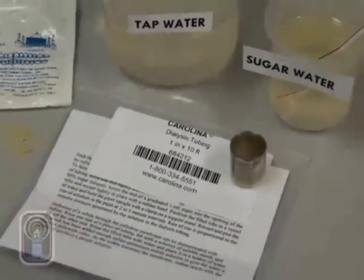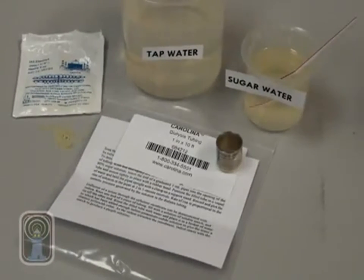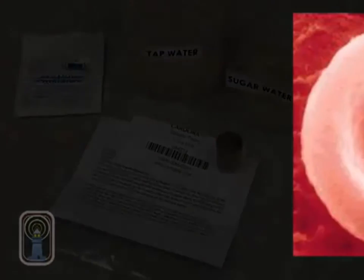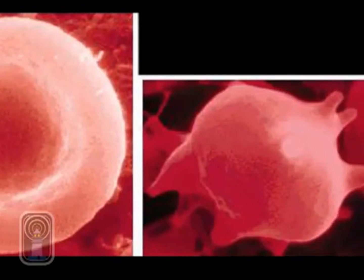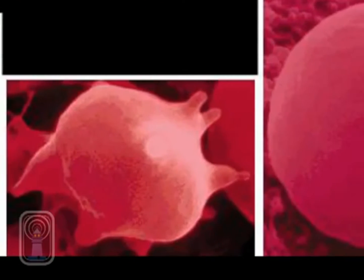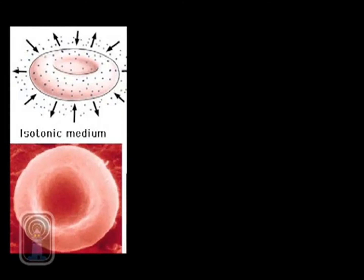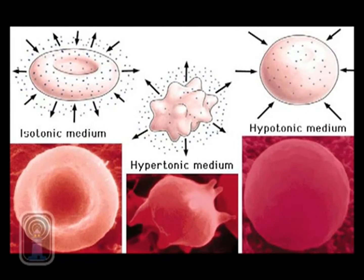Like osmotic pressure, tonicity is influenced only by solutes, such as sugar, that cannot cross the membrane. There are three classifications of tonicity that one solution can have relative to another. Those three classifications are isotonic, hypertonic, and hypotonic.